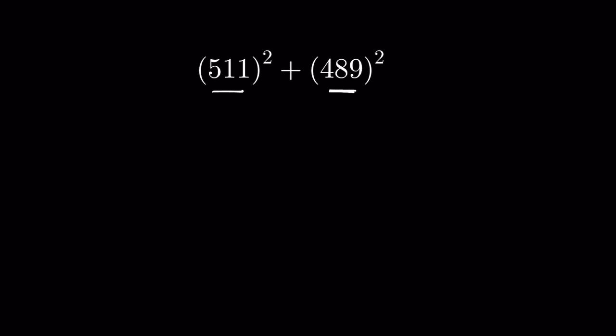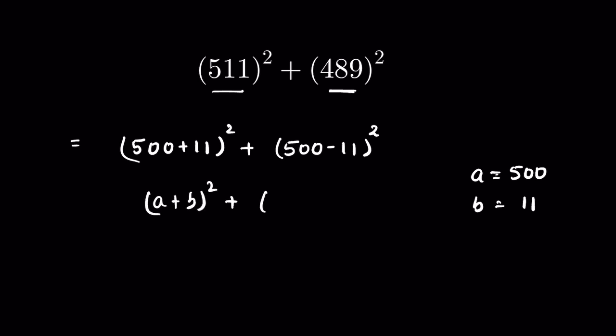We can write 511 as 500 plus 11, whole square, plus 489 as 500 minus 11, whole square. Now if we consider a equals 500 and b equals 11, then this is in the form of (a+b)² plus (a-b)².